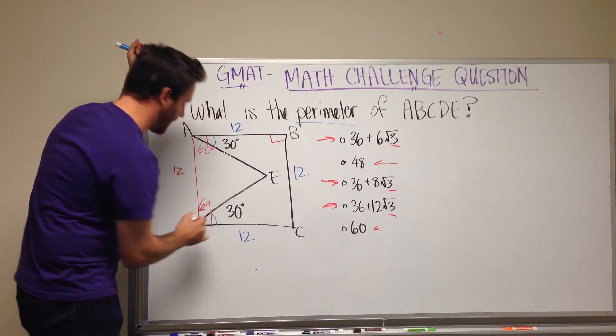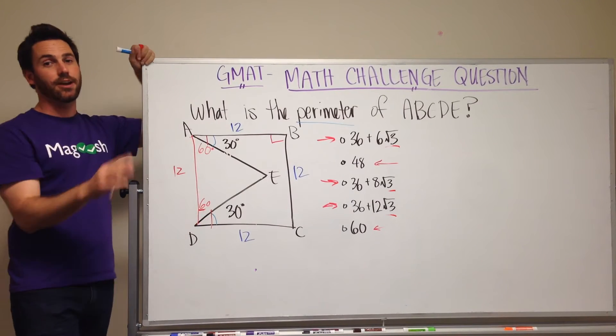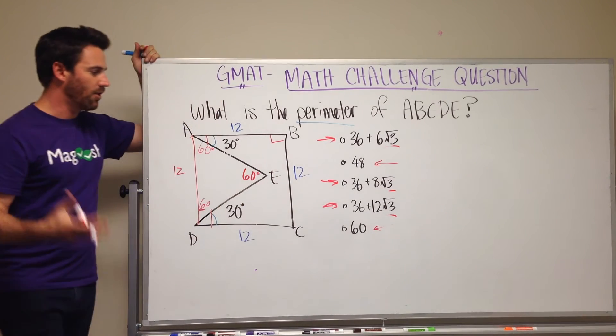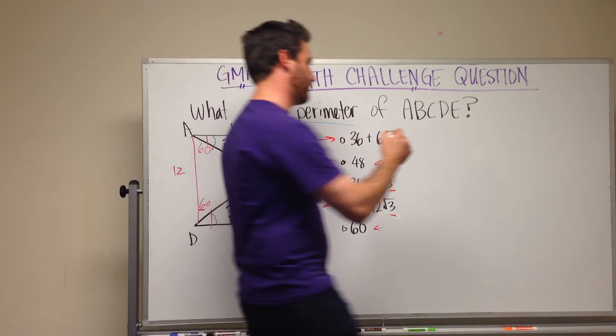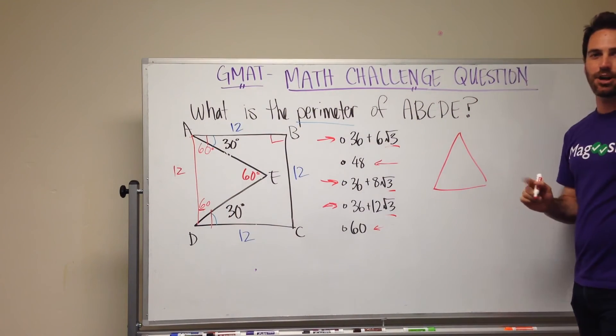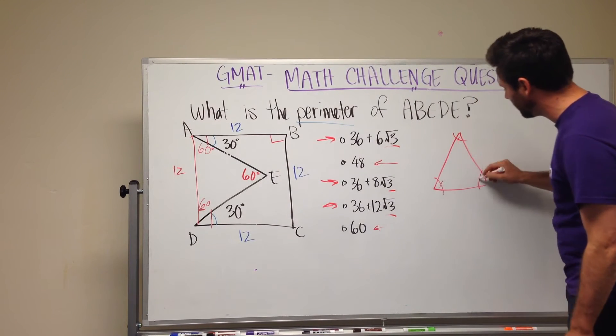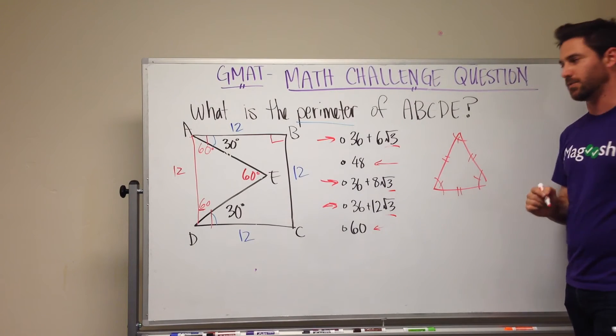This is going to be 60 as well. And if this is 60 and that's 60, I know a triangle has 180 degrees in it, which leaves 60 here. Wow, what do I have now? I have an equilateral triangle. Hopefully you guys know all about an equilateral triangle. So it has equal angles, all equaling 60, and the sides are all equal as well.